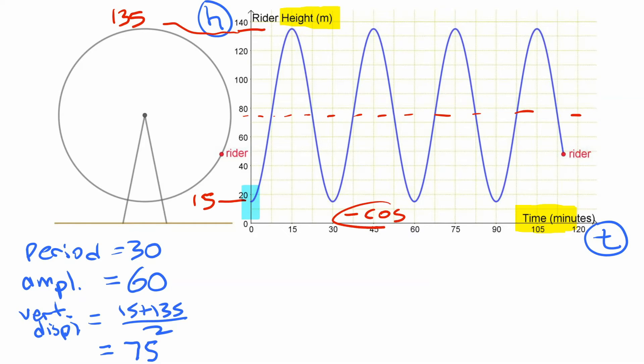If we were going to start at a high point and use positive cosine, we'd have to have a phase shift. We'd have to shift it 15 to the right, which isn't too hard, but it's easier if we can avoid doing that. So I'm going to choose to use negative cosine as my base function here.